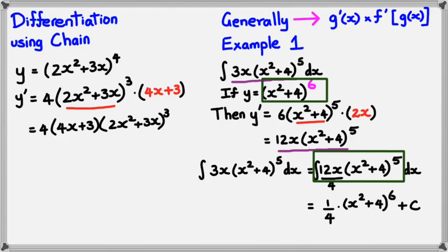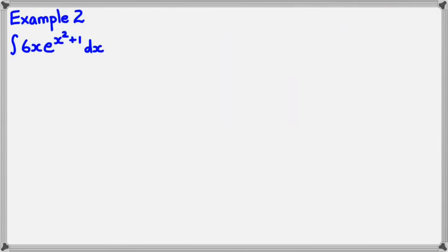It might seem a bit much, but I've got two more examples. We'll go through a couple more and see if you can work out the pattern. The best thing to do is, once you finish integrating the function, quickly differentiate it to check whether you're getting back to the original question. Let's have a look at another example. I want to integrate 6x times e to the power of (x squared plus 1), dx.